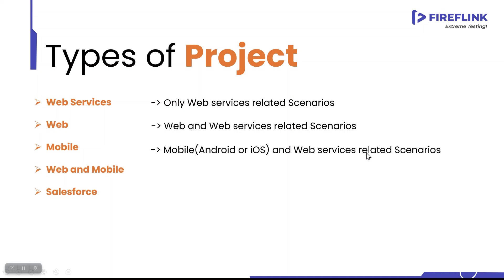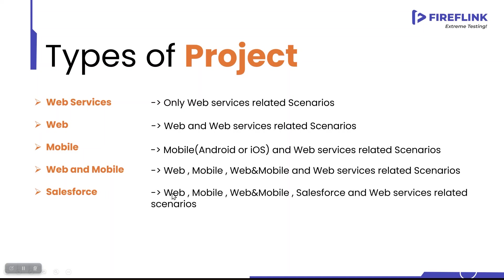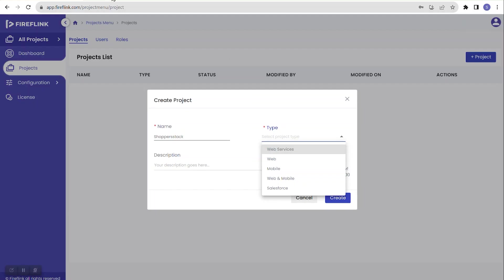Selecting 'Web and Mobile' lets you automate web and mobile — Android or iOS — in a single script, along with web services. Selecting 'Salesforce' covers web, mobile (Android or iOS), and Salesforce-specific scenarios plus web services in a single script. Web services is an addition to all project types because web service testing is back-end testing applicable across all types.